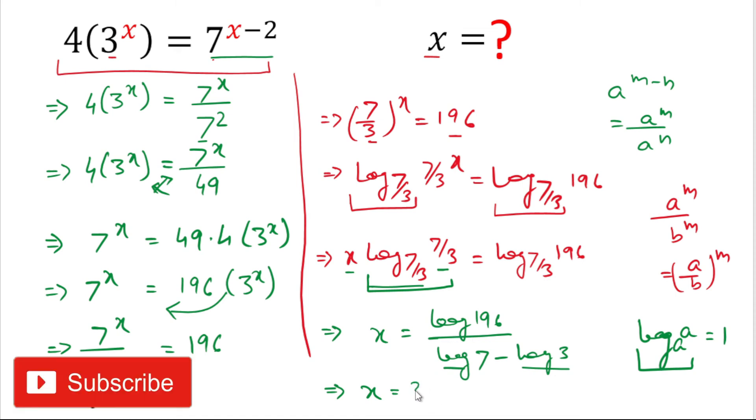Now we can calculate the value of x. x equals the value of log 196 is 2.29256 divided by the value of log 7 is 0.805098 minus the value of log 3 is 0.477121.